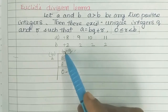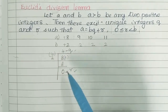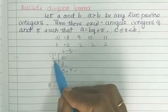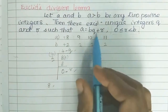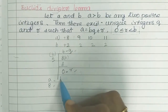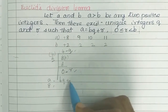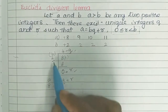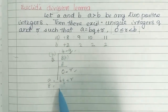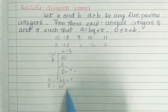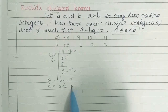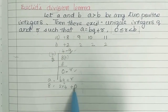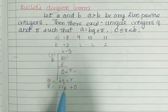So, this is b into q. A equals bq plus r. So if a equals 8, b equals 2, then q equals 4. So 2 into 4 plus r equals 0. That means 2 fours are 8, and 8 plus 0 is 8. The remainder r is 0.